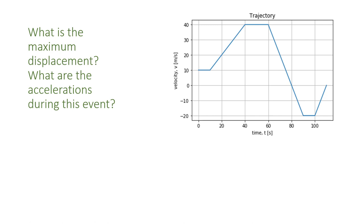Now let's do an example where we solve for displacement and acceleration from the velocity graph. The first thing we need to do is take a good look at our velocity graph. From 0 to 10 seconds it's moving positively at a constant speed; from 10 to 40 seconds it speeds up; from 40 to 60 seconds it maintains a speed; from 60 to 90 seconds the acceleration is negative.